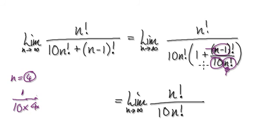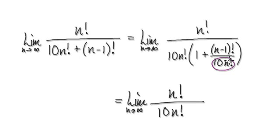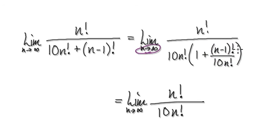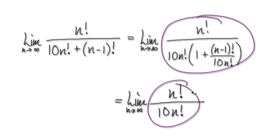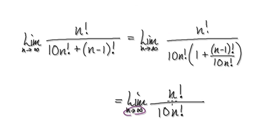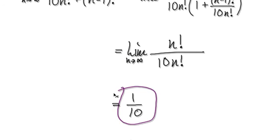As n tends to infinity, this thing here will magnify itself, heading towards 1 because the denominator will be a lot bigger than the numerator. So this thing heads towards 0, giving you 1 plus 0. So as n tends towards infinity, this thing here is going to be 1. Then 1 times 10n factorial will be 10n factorial. So basically this will head towards 10n factorial. And as n tends towards infinity, you're going to get 1 over 10. So the limit is actually 1 over 10.